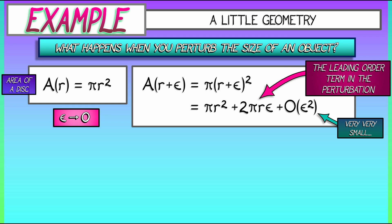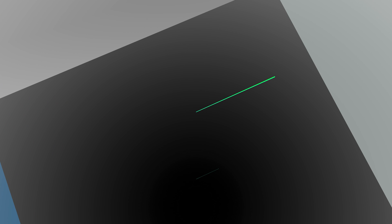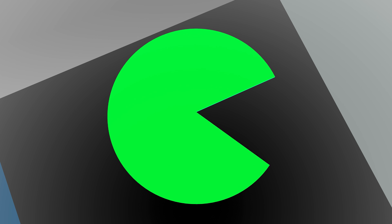Now, you look at that and you think to yourself, wait, 2 pi r, that's the circumference of the circle. And indeed, to leading order, the change in the area is controlled by the circumference.